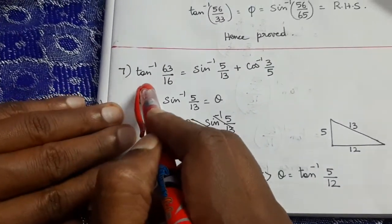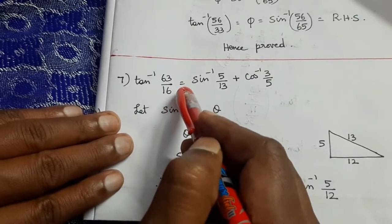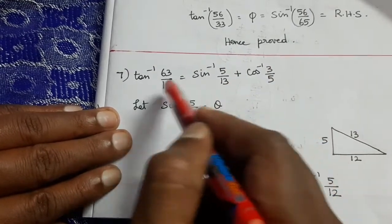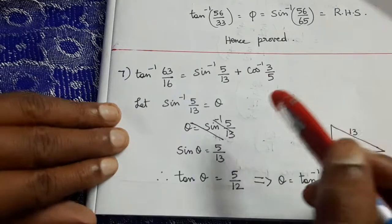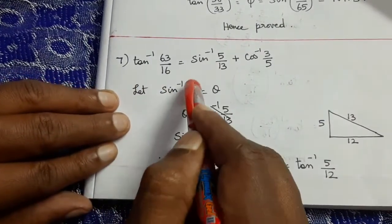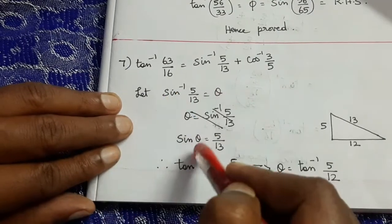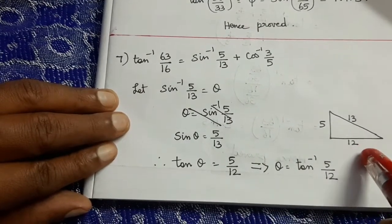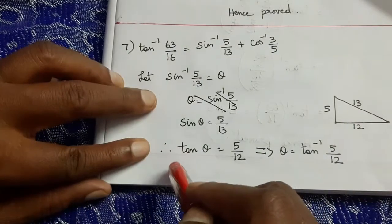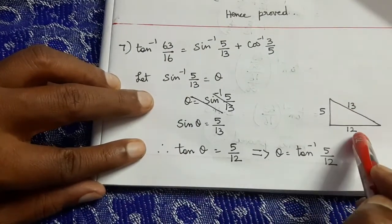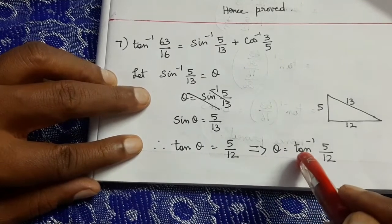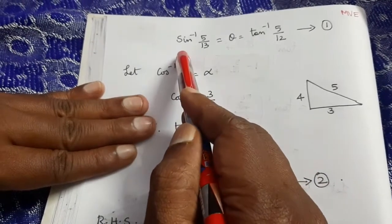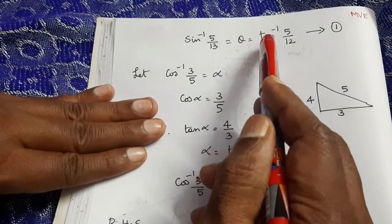Question 7: Prove tan⁻¹(63/16) = sin⁻¹(5/13) + cos⁻¹(3/5). Consider RHS. Let θ = sin⁻¹(5/13), so sin θ = 5/13. In a right-hand triangle, opposite = 5, hypotenuse = 13. Adjacent = √(13² − 5²) = 12. So tan θ = 5/12, giving sin⁻¹(5/13) = tan⁻¹(5/12).